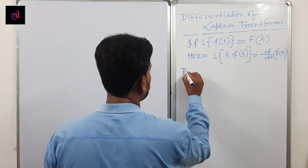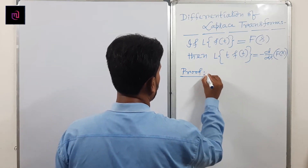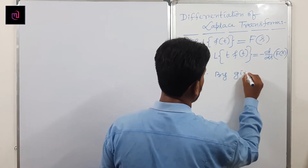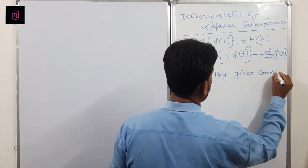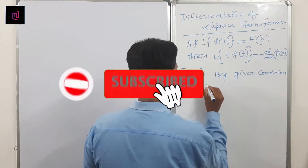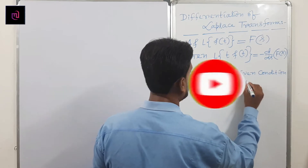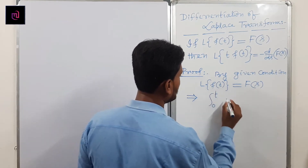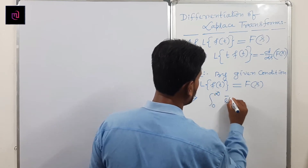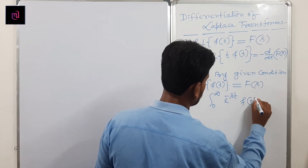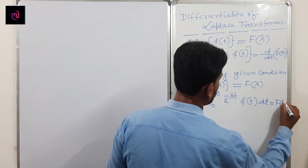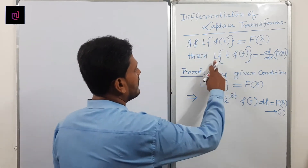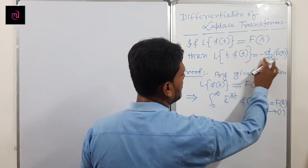Then we prove it. By given condition, Laplace of f(t) equals F(s) — that is the given condition. What is the standard formula? Laplace of t·f(t) equals minus of d/ds of F(s).